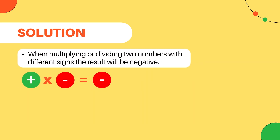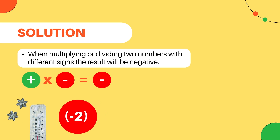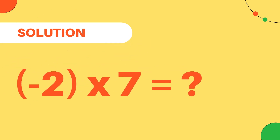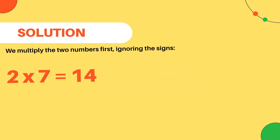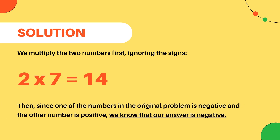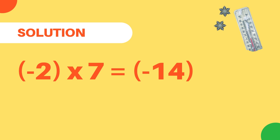To solve this problem, we can use the rule that multiplying a negative integer by a positive integer results in a negative integer. We can represent the temperature drop with the negative integer negative 2, since the temperature is decreasing, and we can use positive 7 to represent the hours. So we can rewrite the problem as negative 2 multiplied by positive 7. To find the solution, we multiply the two numbers first, ignoring the signs, so we calculate 2 multiplied by 7 equals 14. Then, since one of the numbers is negative and the other is positive, we know that our answer is going to be negative.